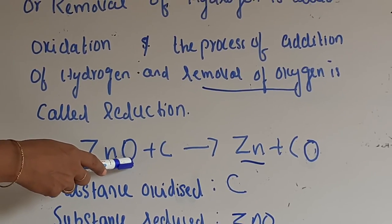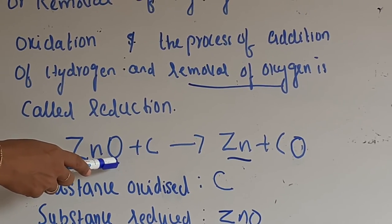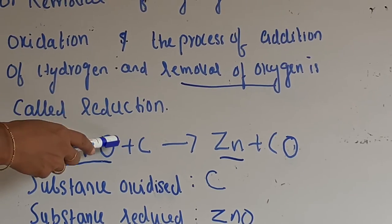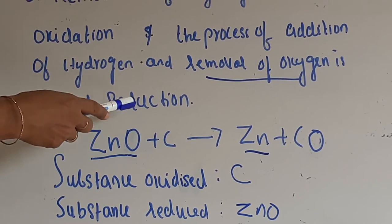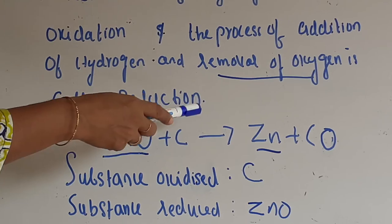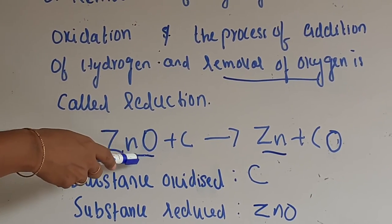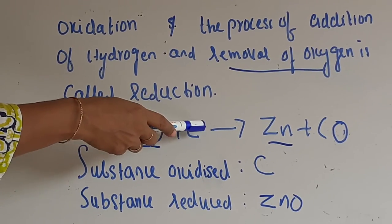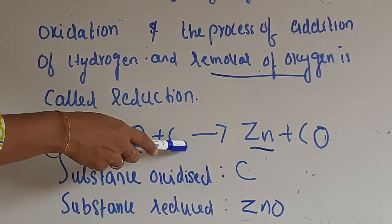Zinc oxide is undergoing reduction. Who is responsible for that? Carbon is taking oxygen from zinc oxide. That's why zinc oxide is changing to zinc. So the reduction of zinc oxide is because of carbon. So carbon is the reducing agent here.